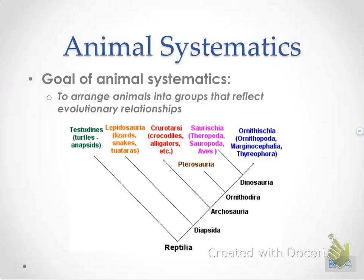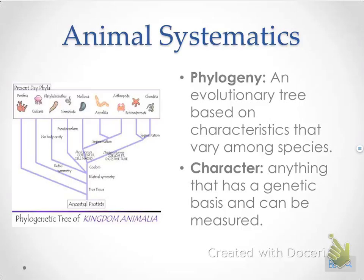Animal systematics arranges animals into groups showing evolutionary relationships. For example, reptilia is at the bottom, but as you go up, groups become more and more specific. Two groups shown closely together are more closely related than groups farther apart. We'll go over these more in class.